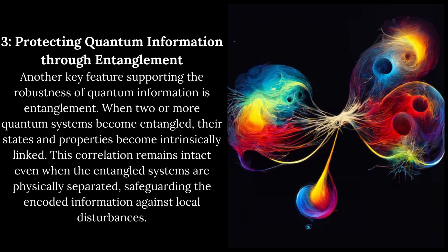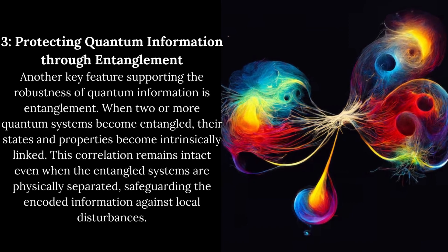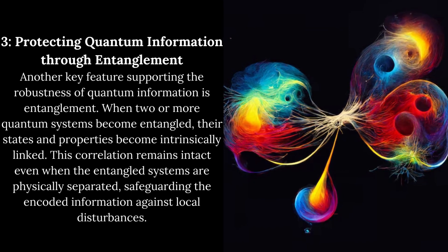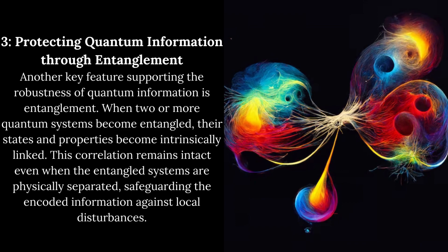Protecting Quantum Information Through Entanglement. Another key feature supporting the robustness of quantum information is entanglement. When two or more quantum systems become entangled, their states and properties become intrinsically linked. This correlation remains intact even when the entangled systems are physically separated, safeguarding the encoded information against local disturbances.